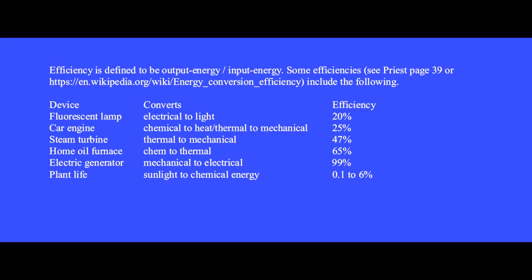Efficiency is defined to be output energy divided by input energy. Some efficiencies include the following: a fluorescent lamp converts electrical energy to light energy with 20% efficiency. Car engines convert chemical to heat and thermal energy and then to mechanical energy. Steam engines convert thermal energy to mechanical. Home oil furnaces convert chemical energy to thermal. Electrical generators convert mechanical energy to electrical. Plant life converts sunlight to chemical energy.